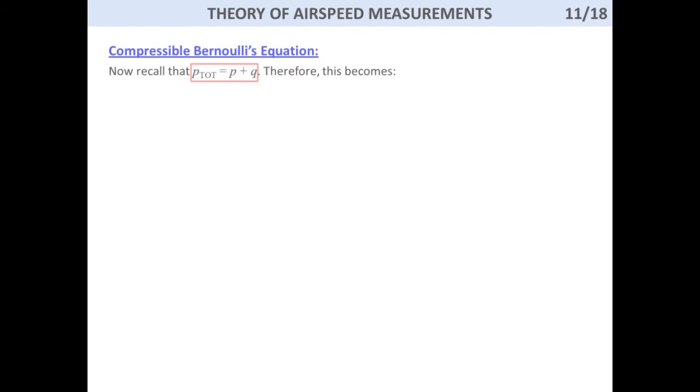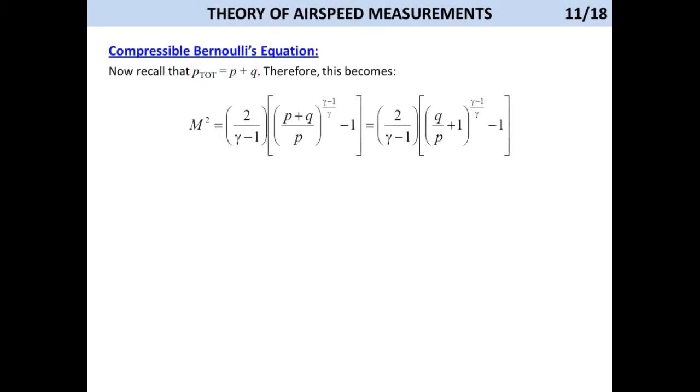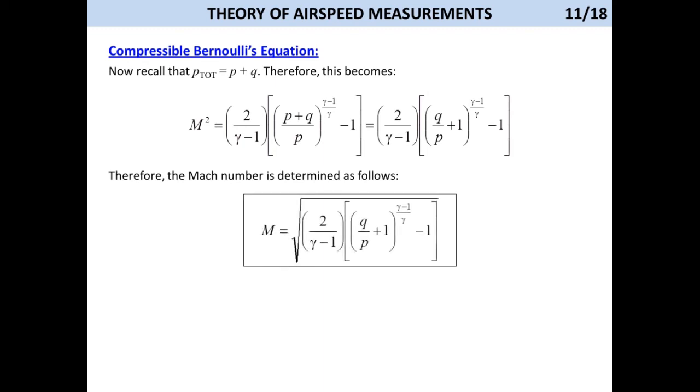Since the total pressure is the far field static pressure plus the dynamic pressure, this becomes... Therefore, if we know the pressure difference, that is the dynamic pressure, we can determine the Mach number at which it must be generated.